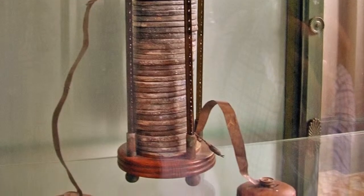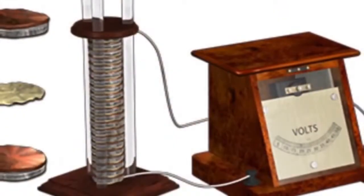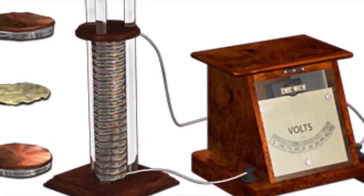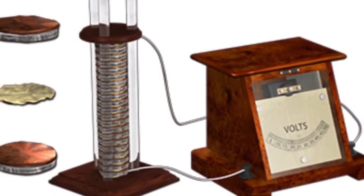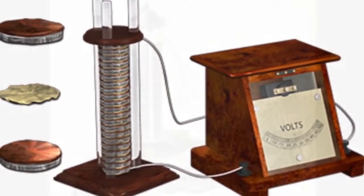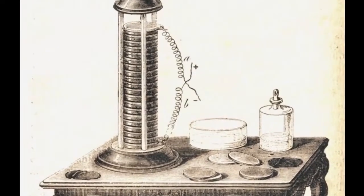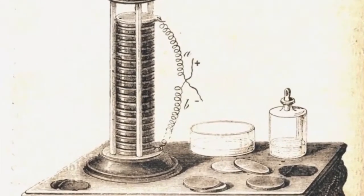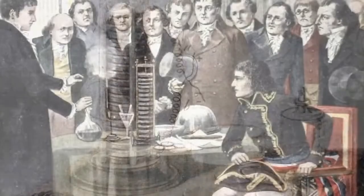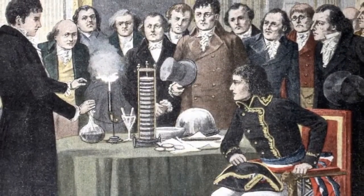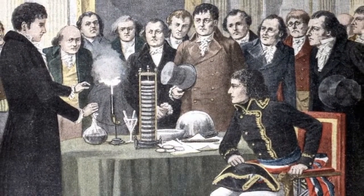When Volta constructed the first voltaic pile, he observed that it produced a continuous electric current. This discovery challenged the prevailing belief that electricity could only be produced by chemical reactions involving separate bodies of metal and electrolyte.